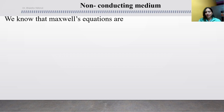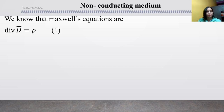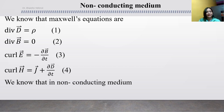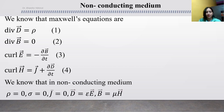For the non-conducting derivation, let me show it quickly. First we write Maxwell's four equations, then the non-conducting conditions: rho equals zero, sigma equals zero, J equals zero, D equals epsilon E, and B equals mu H.